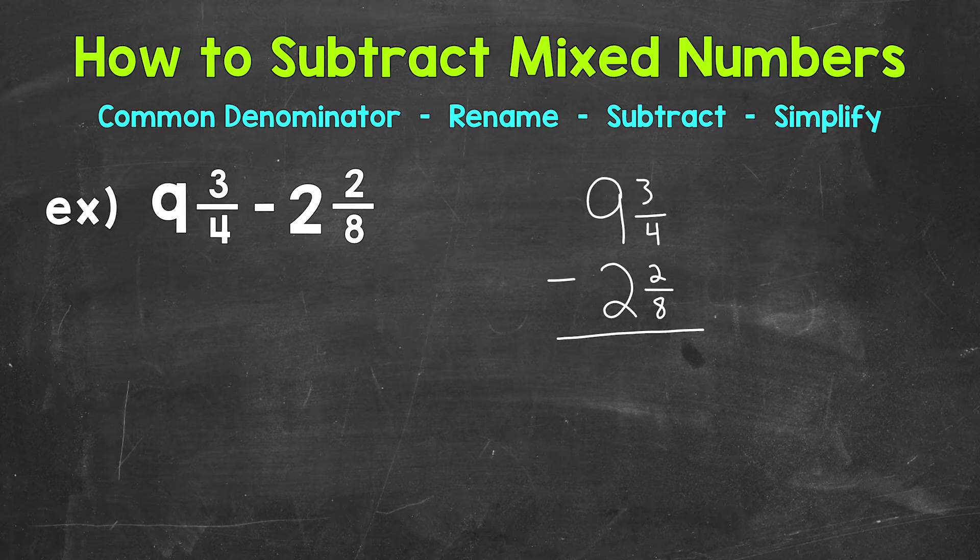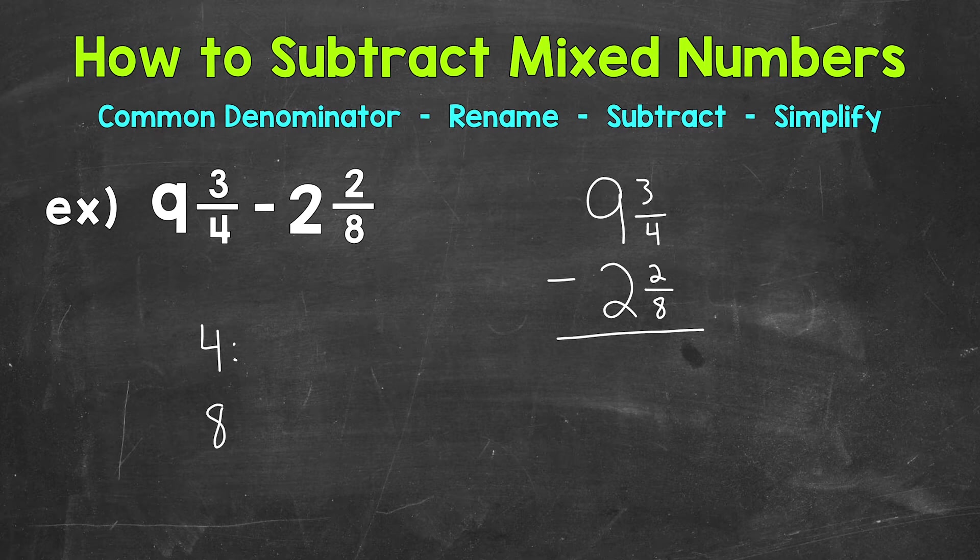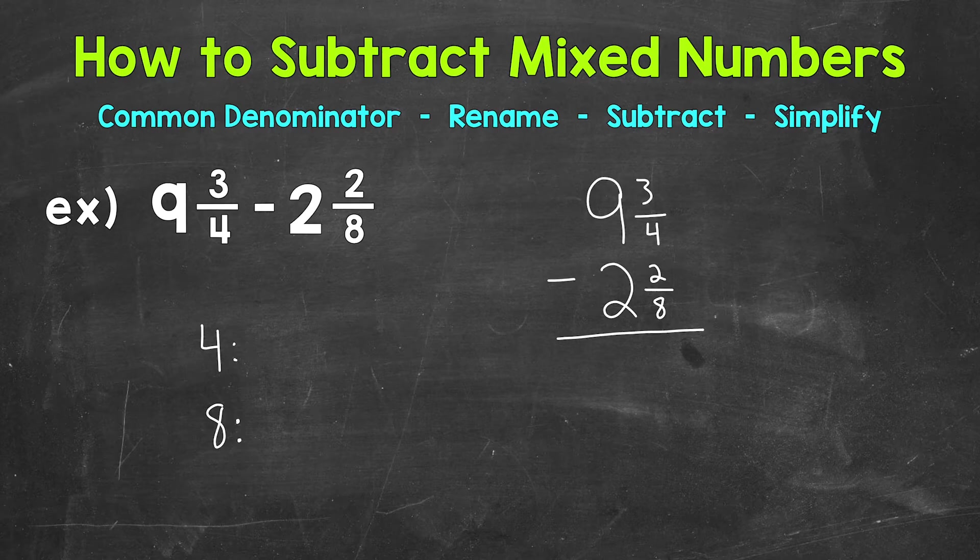We find a common denominator by looking for common multiples, and then the least common multiple we can use for our least common denominator. So let's write out our multiples of 4 and 8. Now you may be able to do this, figure out what the least common multiple is, without writing out the multiples, but I'll write them out as a review.